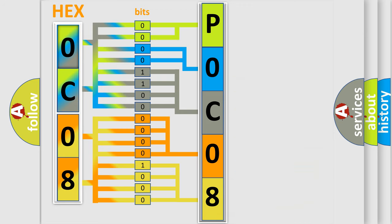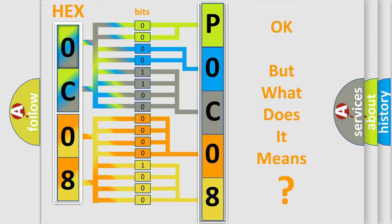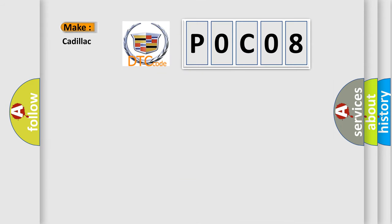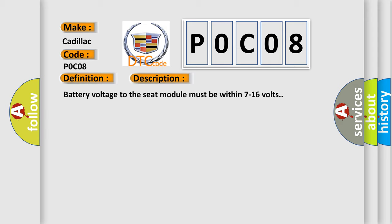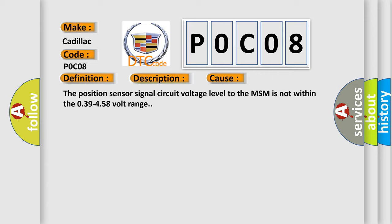We now know in what way the diagnostic tool translates the received information into a more comprehensible format. The number itself does not make sense to us if we cannot assign information about what it actually expresses. So, what does the diagnostic trouble code P0C08 interpret specifically for Cadillac car manufacturers? The basic definition is: driver seat rear vertical position sensor circuit. Battery voltage to the seat module must be within 7 to 16 volts. This diagnostic error occurs most often when the position sensor signal circuit voltage level to the MSM is not within the 0.39 to 4.58 volt range.